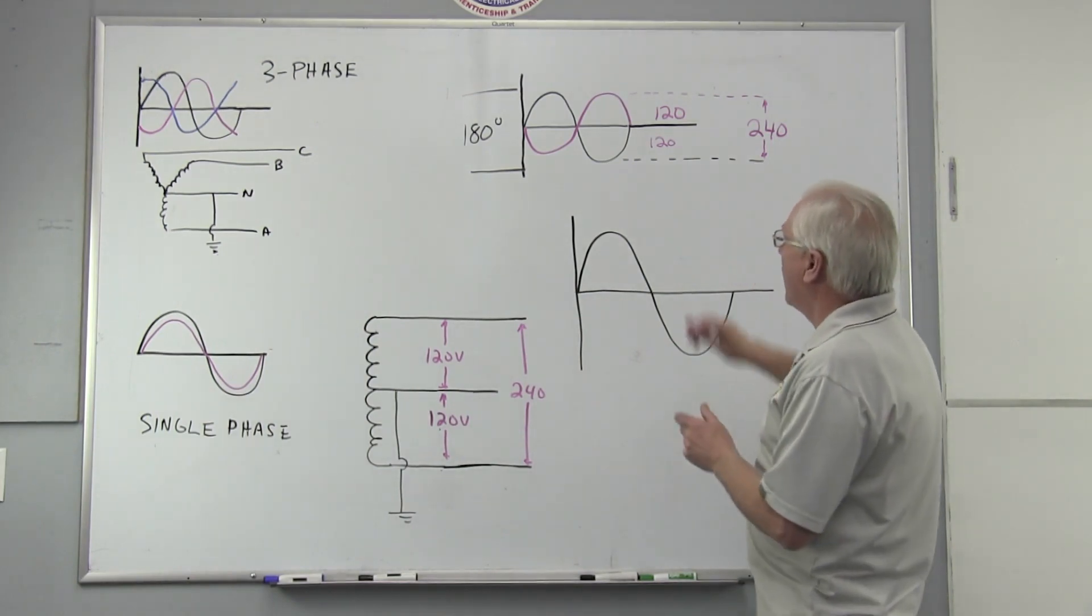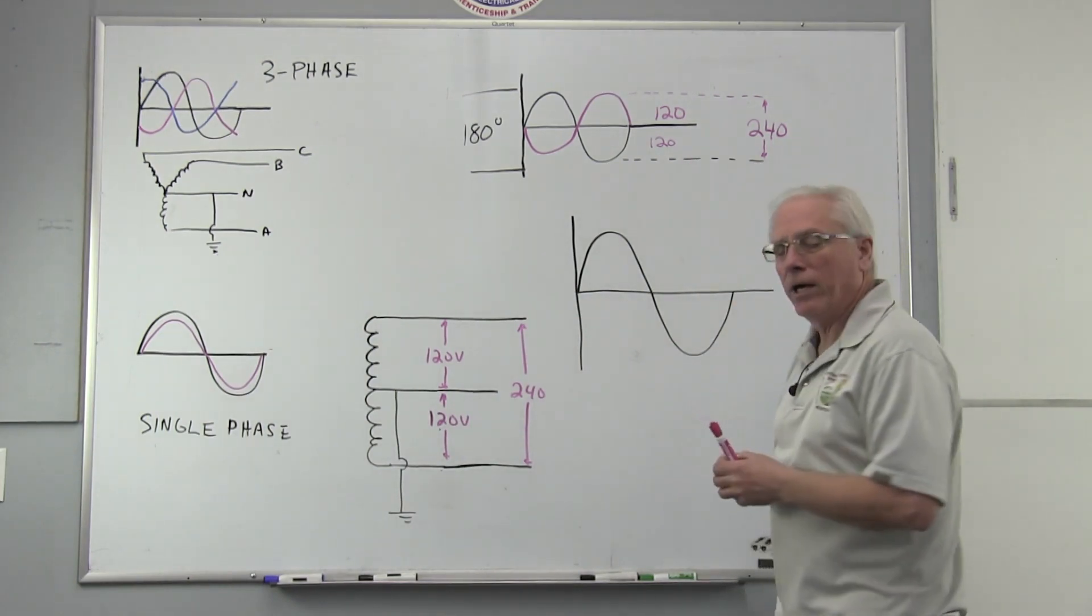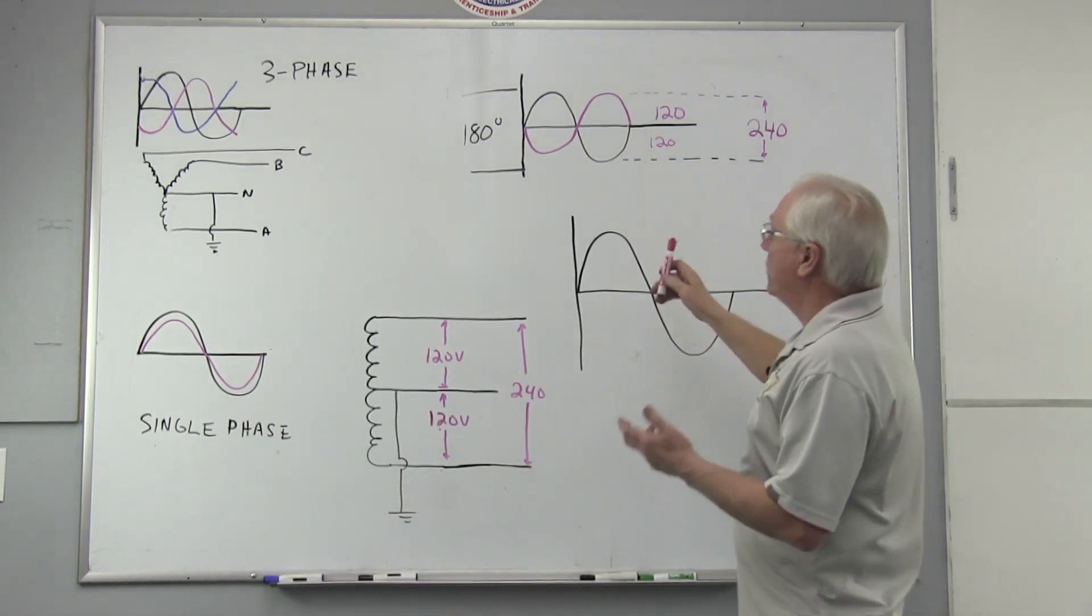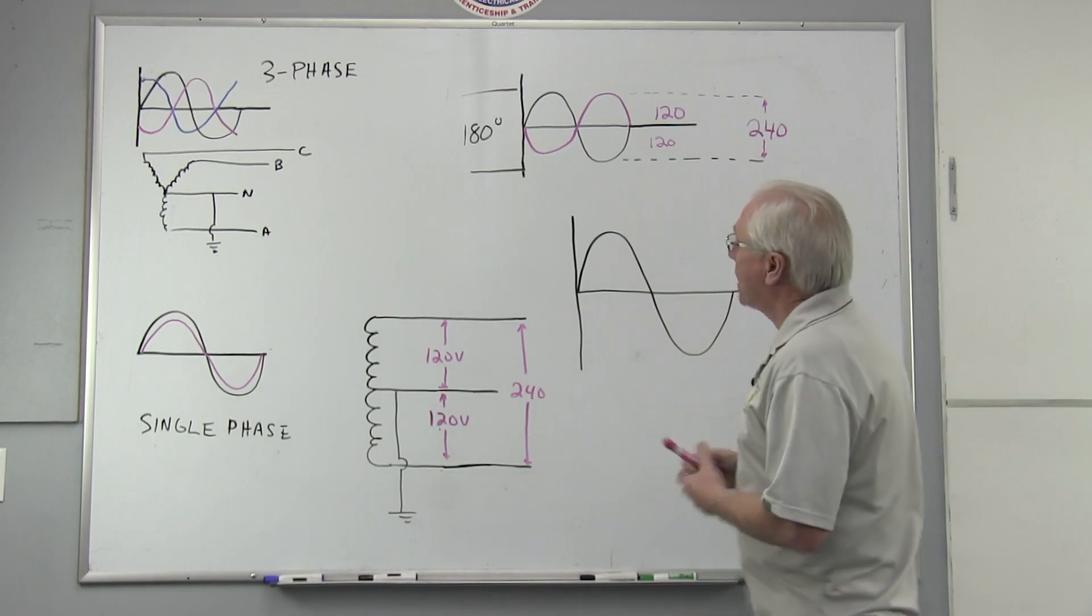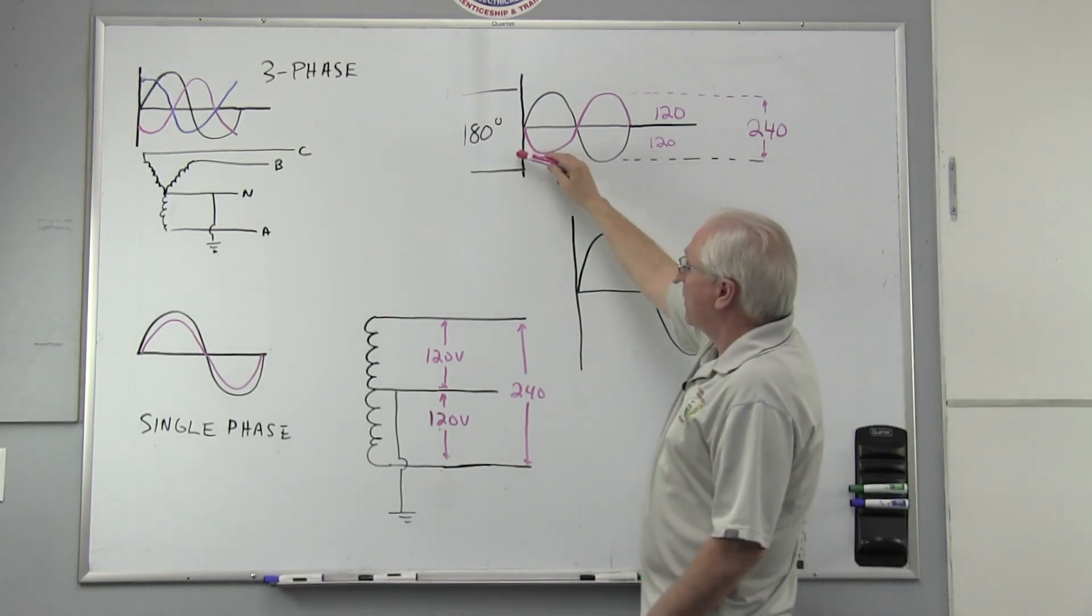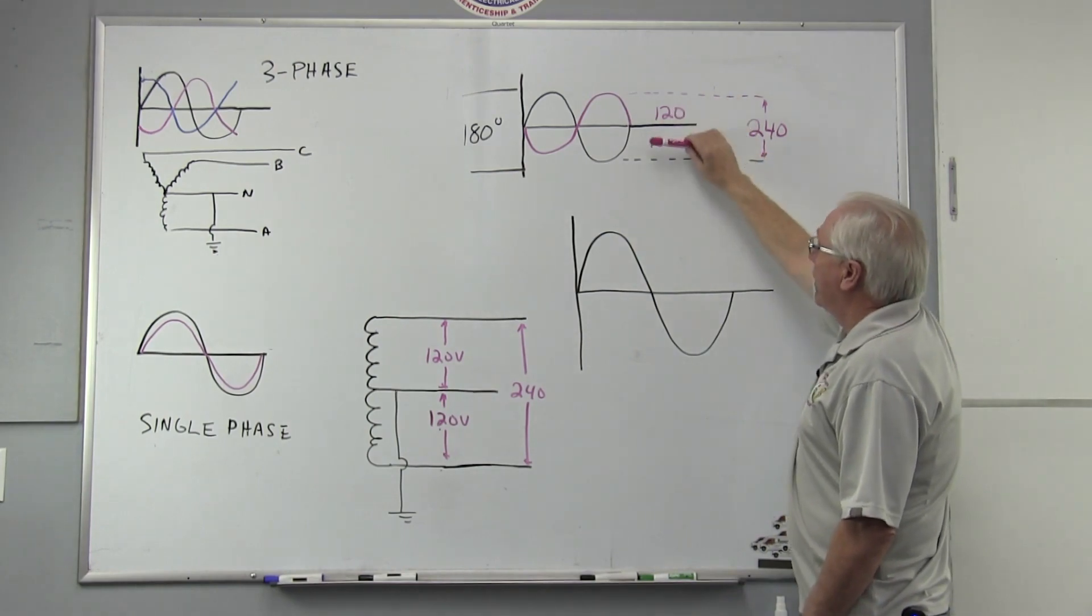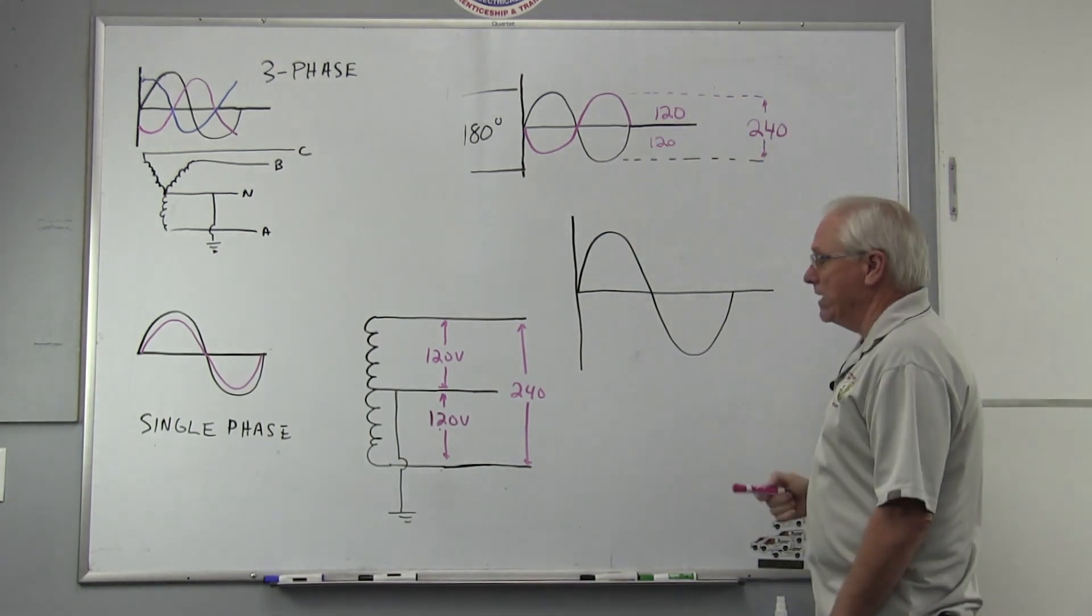But often you would see this drawing above showing what that system looked like on the sine wave. If you look at it, you can see it's actually showing two sine waves that are separated by 180 degrees. That was 120 on one, 120 on the other, and 240 between them.